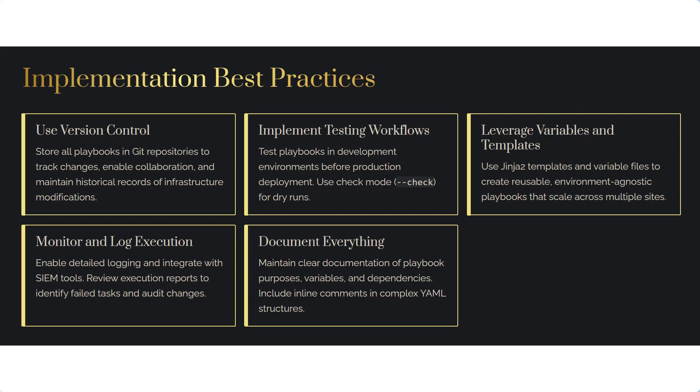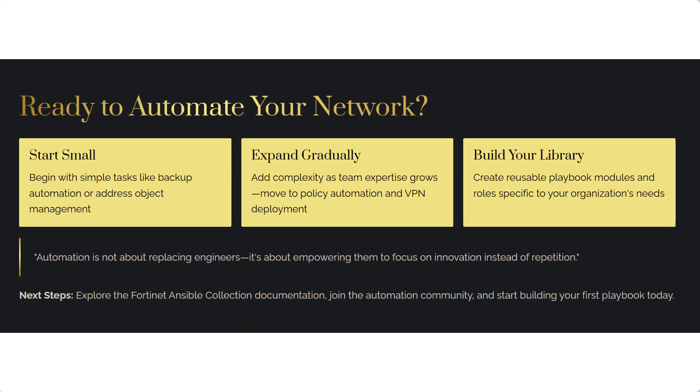Here are a few best practices for implementing automation. First, use version control — use Git for tracking playbooks. Test changes in a dev environment. Use variables to keep playbooks flexible. Document everything. Monitor playbook execution to improve reliability and recover from errors fast. These basics play an important role in our projects.